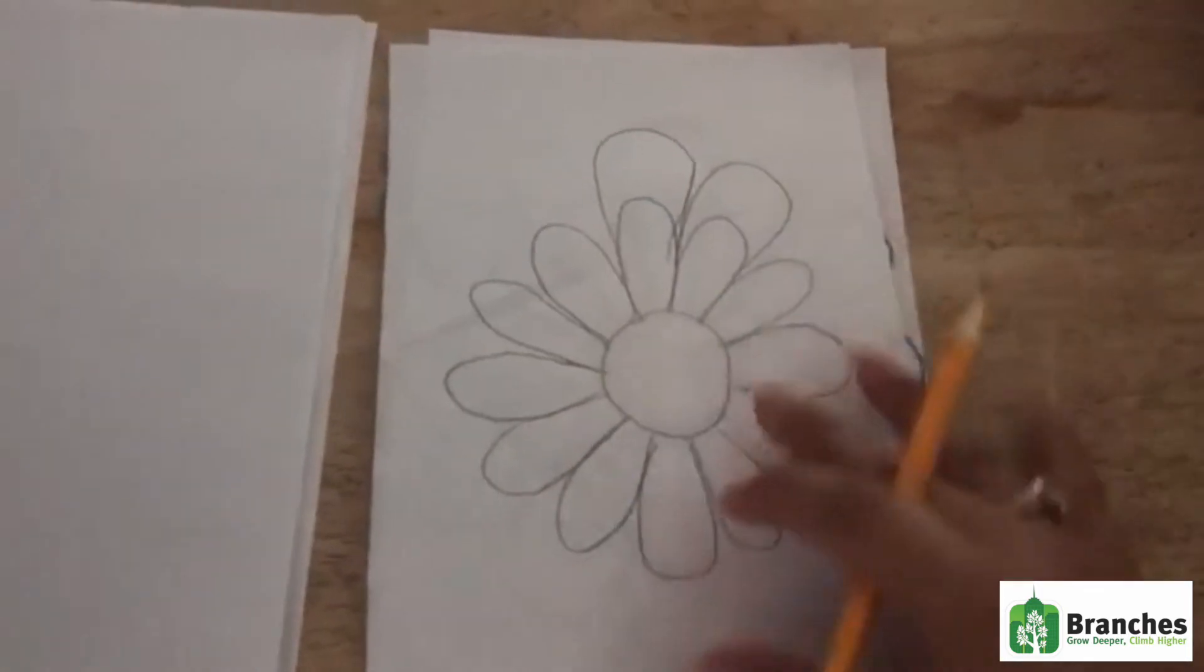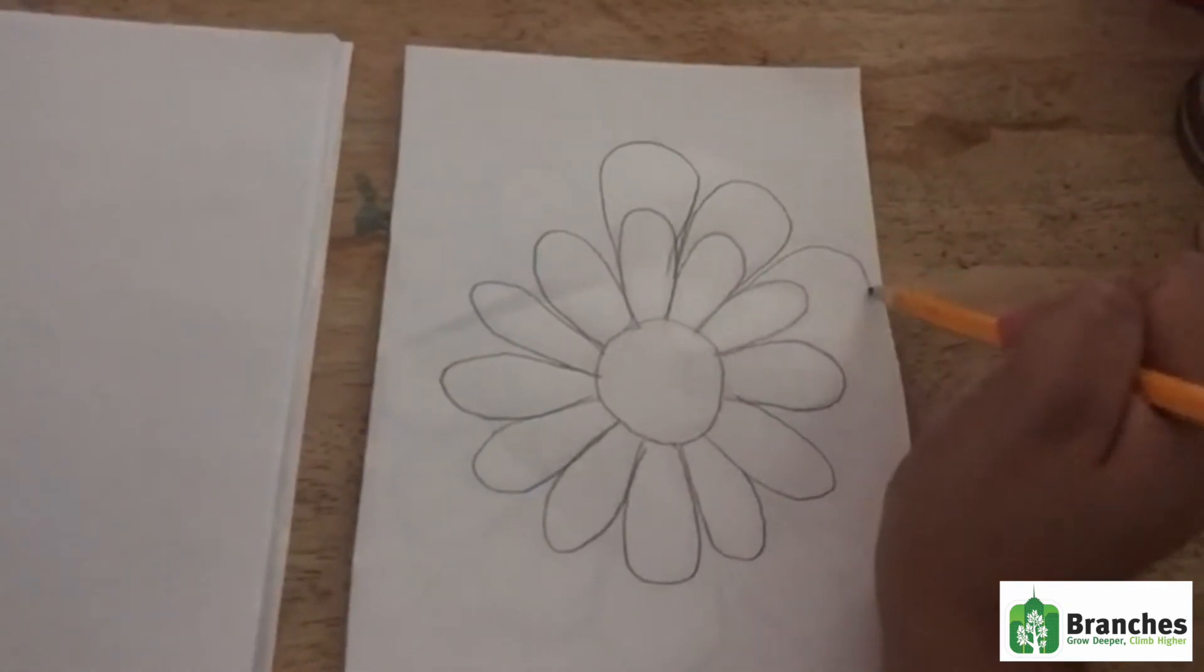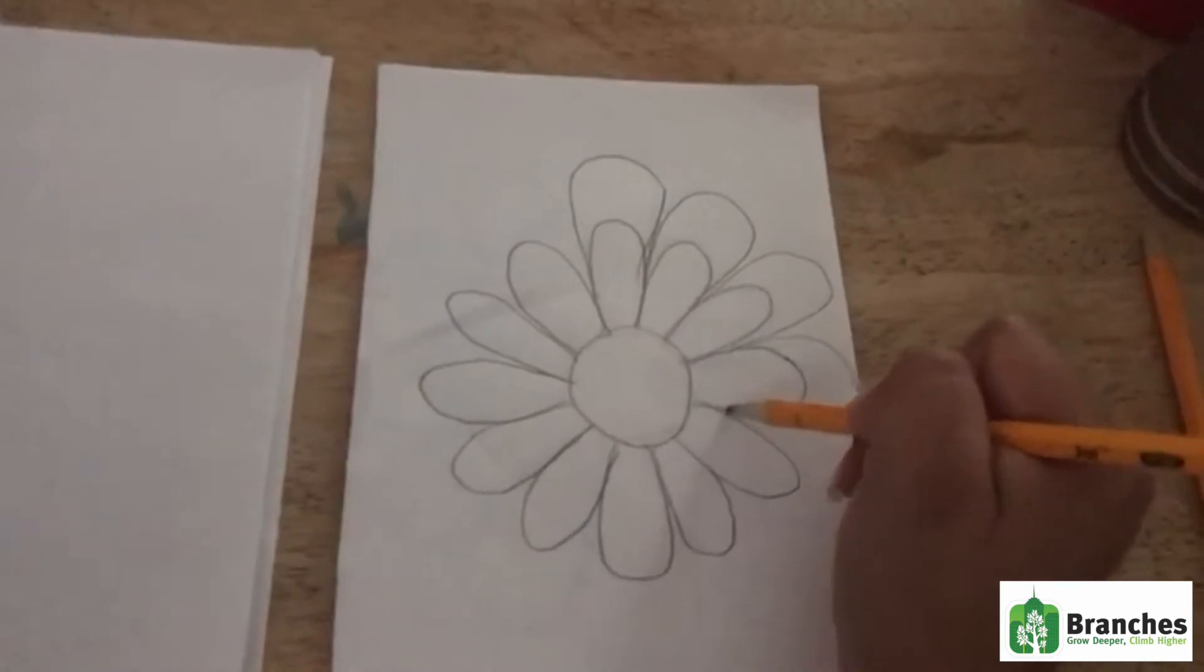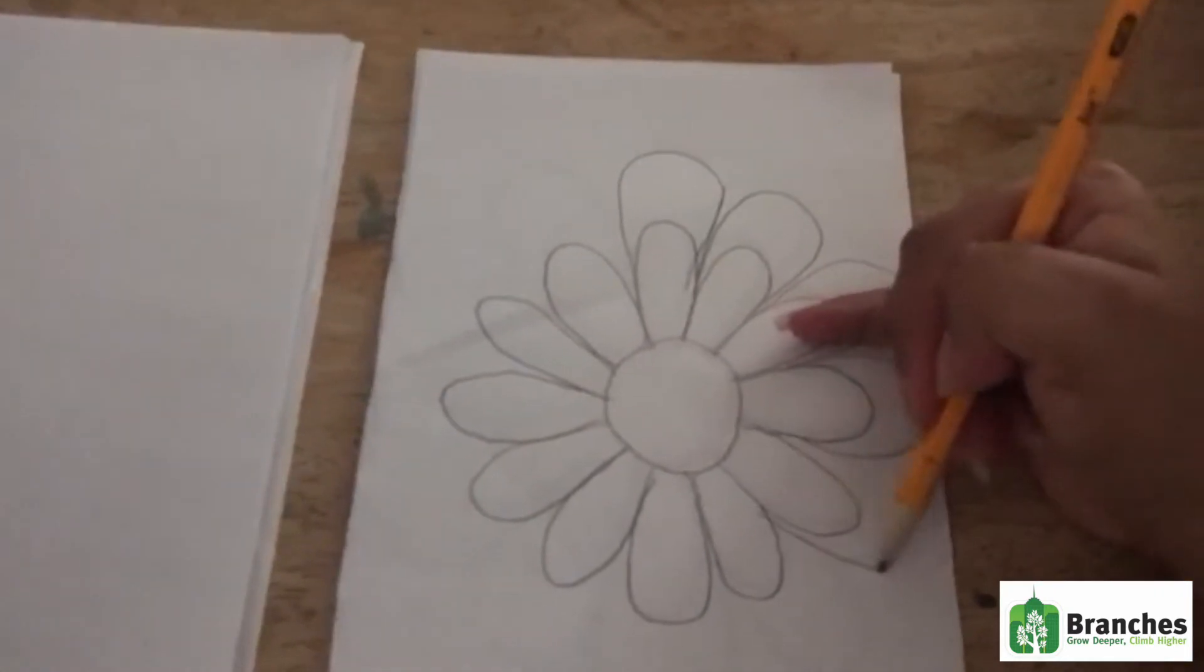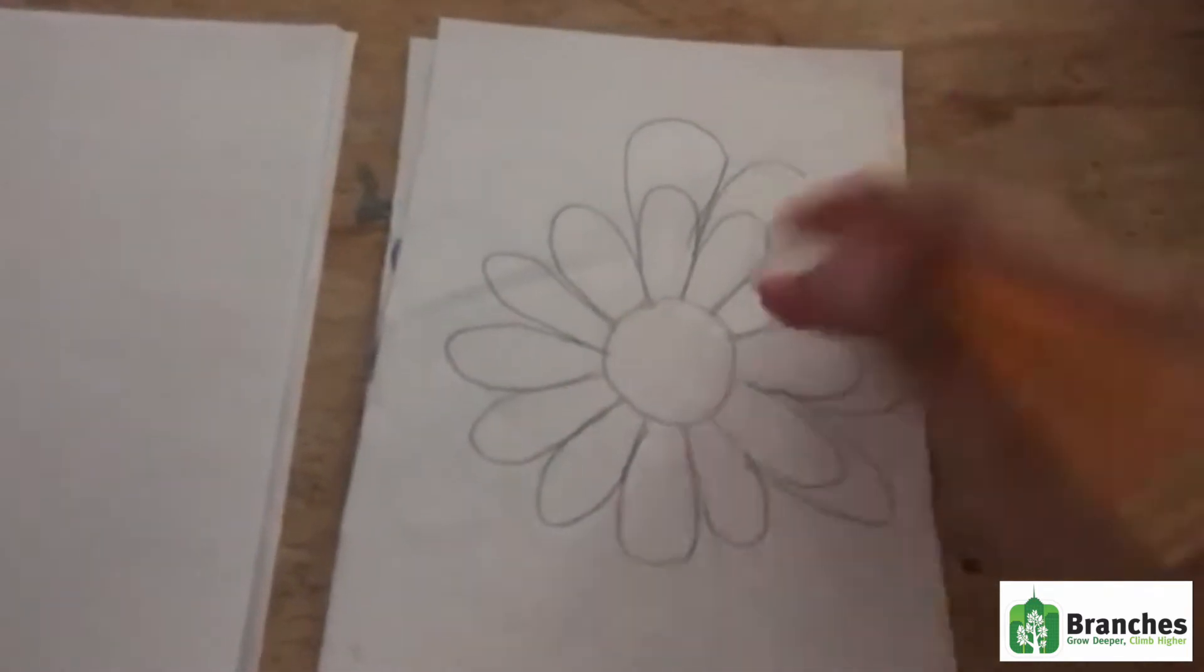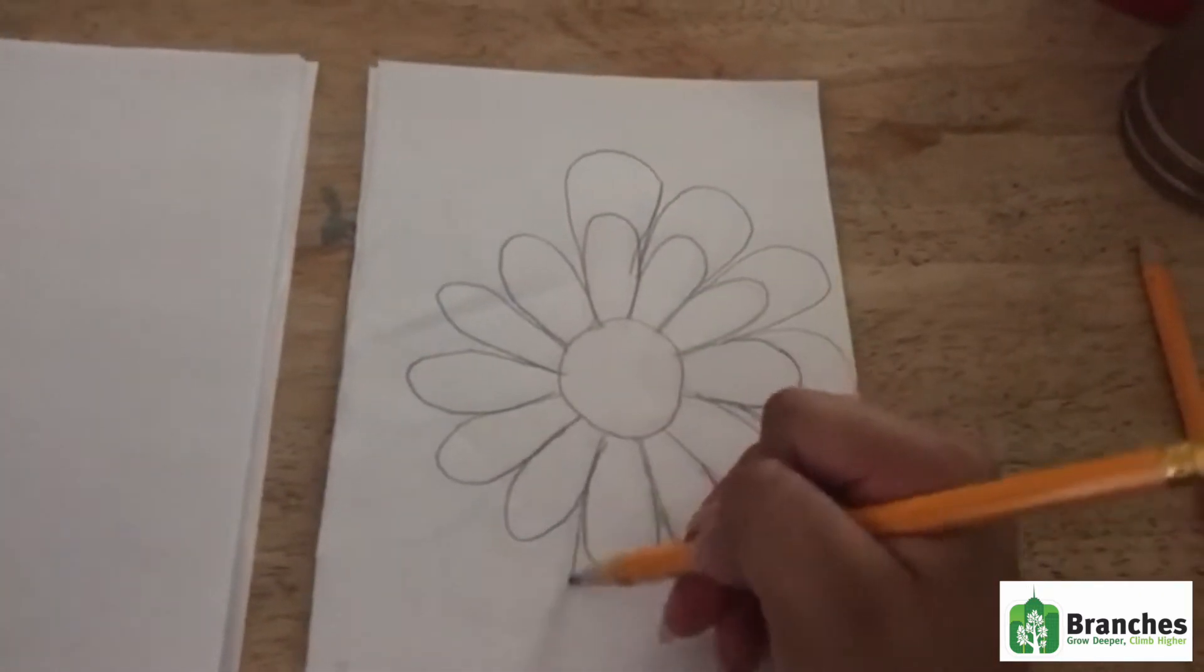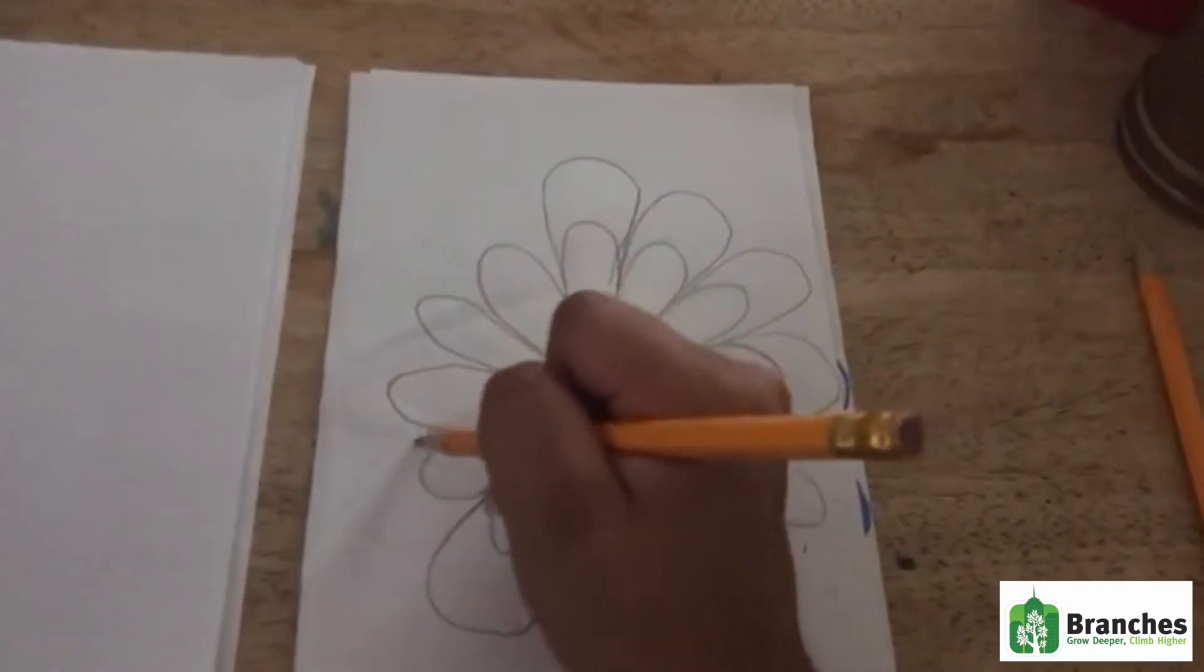Continue that, doesn't have to be too big but it's just big enough to fit a number on there. Like I said my tracing isn't so good but it doesn't matter. Make sure you draw your petals on there.